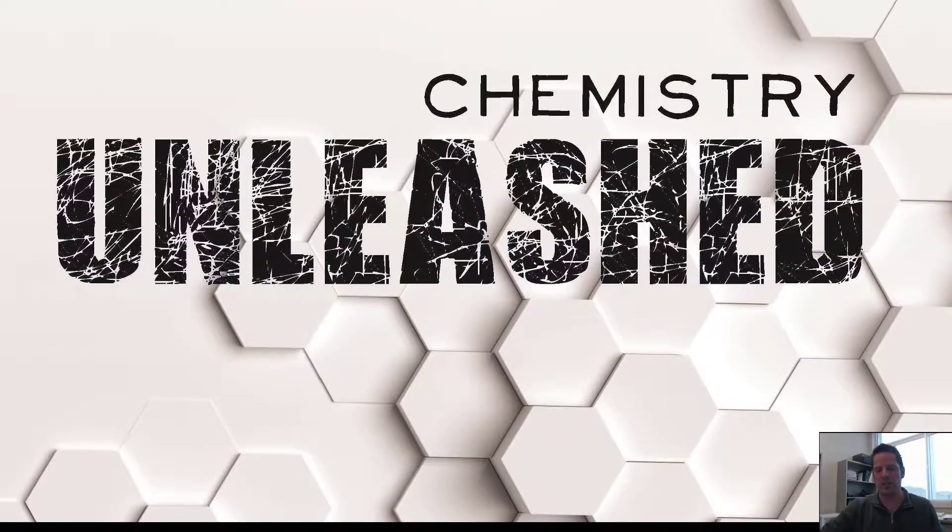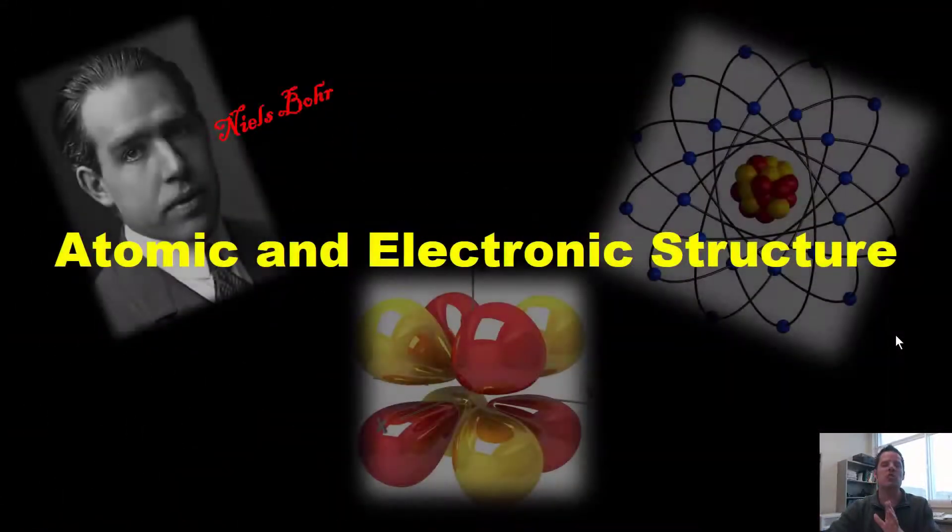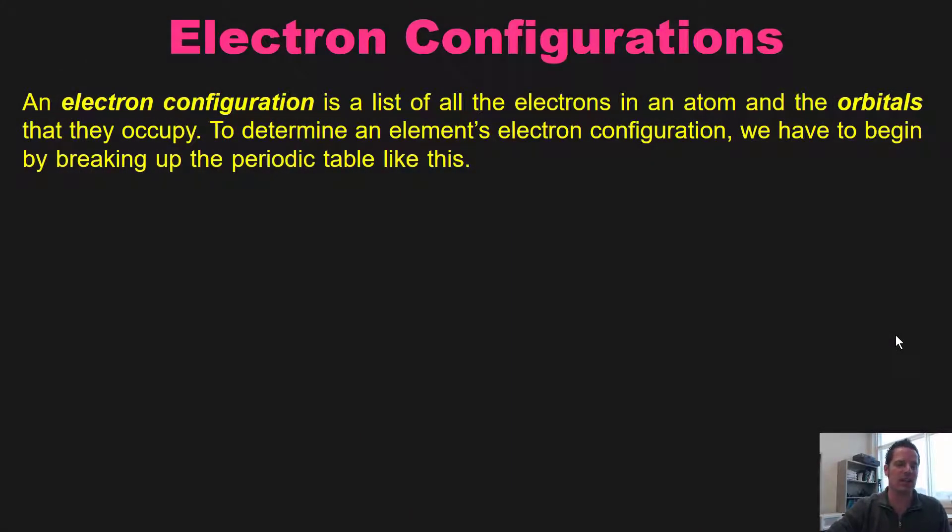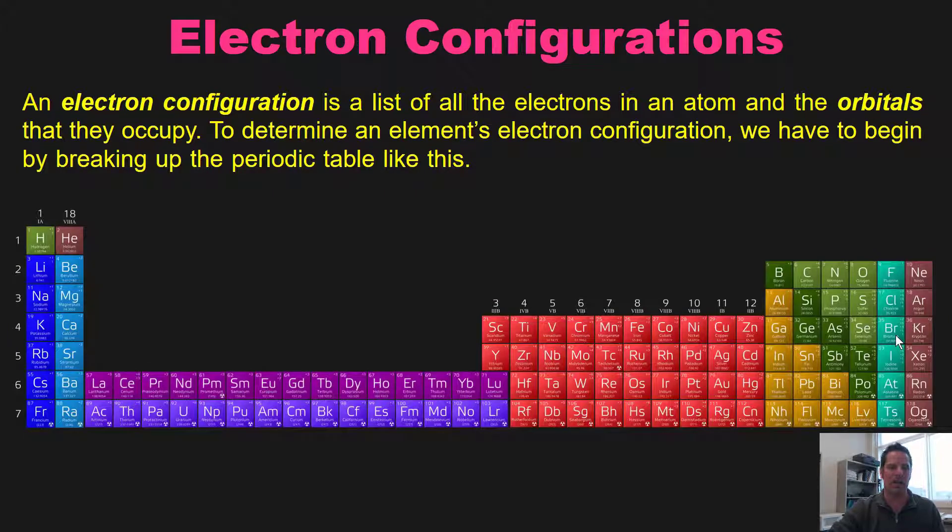So in this and two videos that follow, I'm going to go into some excruciating details about electronic configurations. To explain, an electron configuration is a list of all the electrons in an atom and the orbitals they occupy. To determine an element's electron configuration, we have to begin by breaking up the periodic table like this.